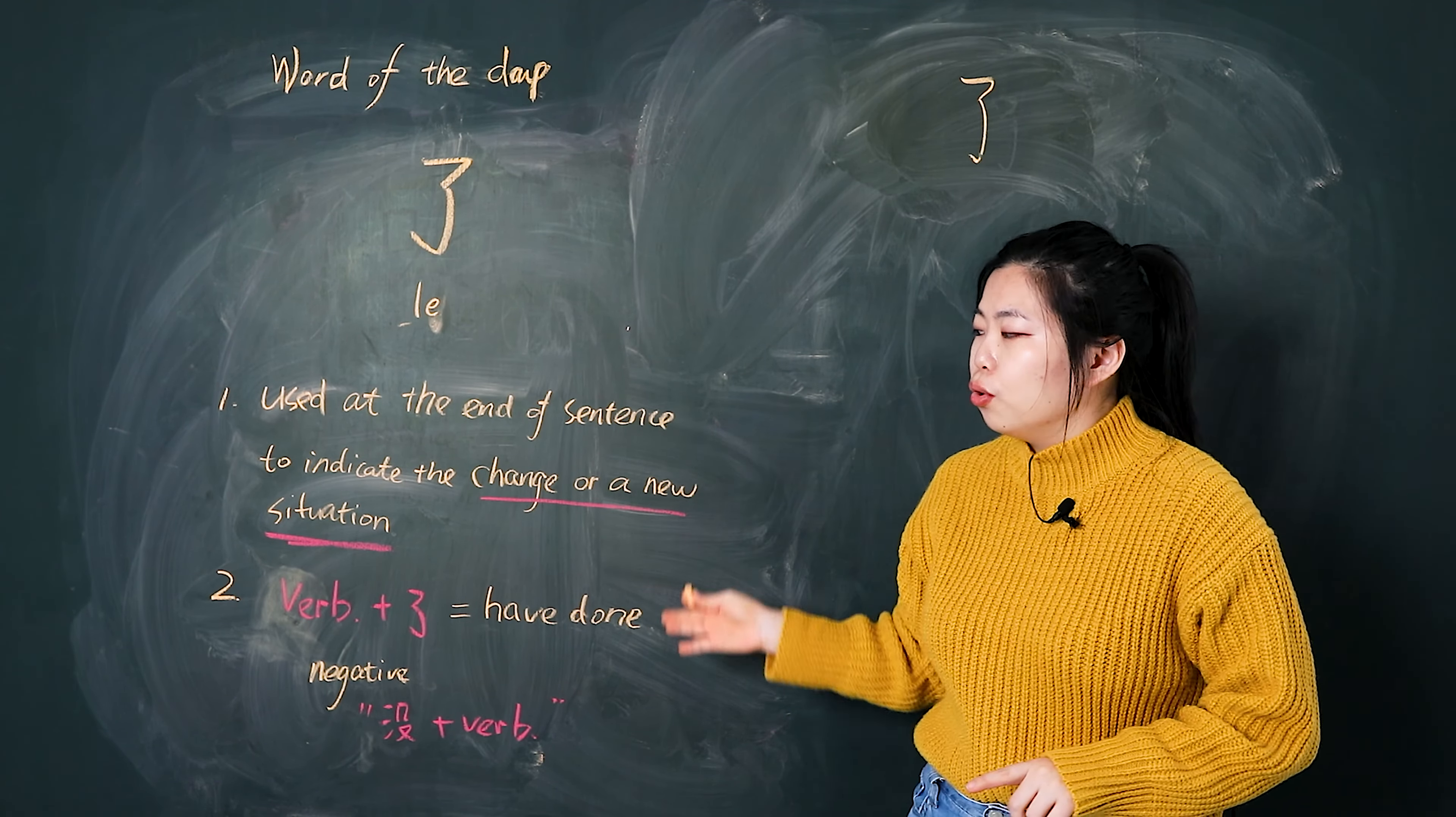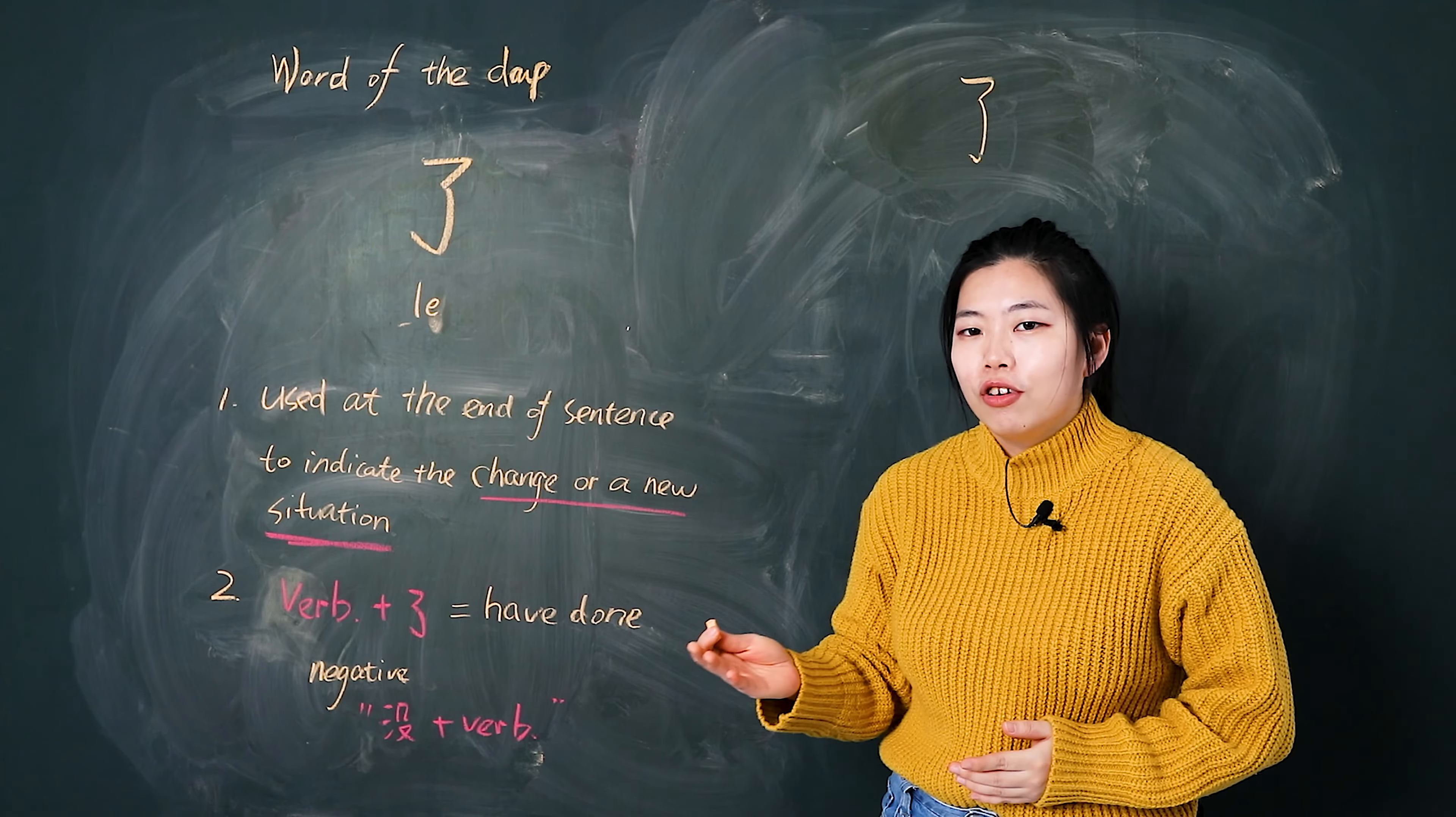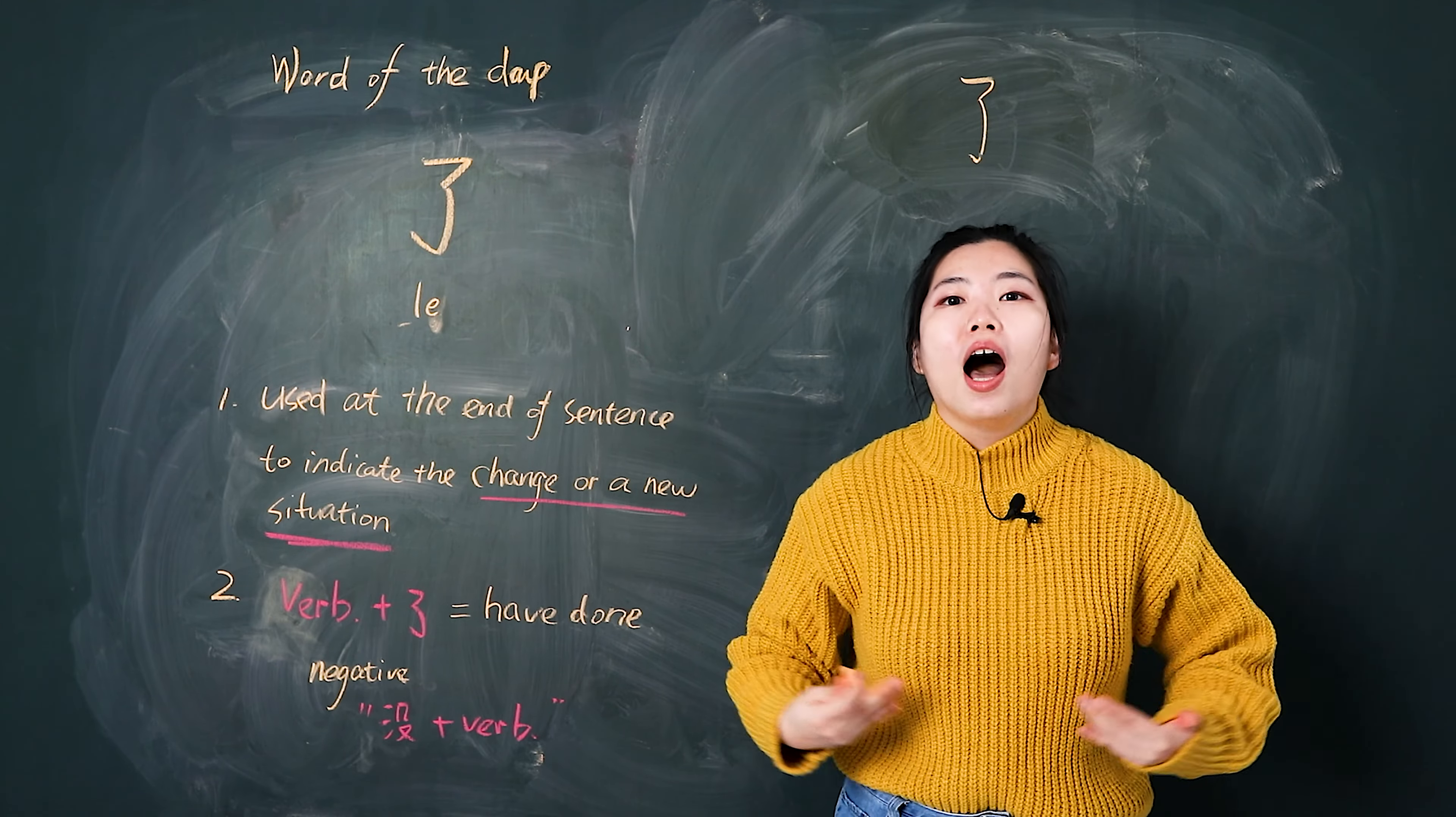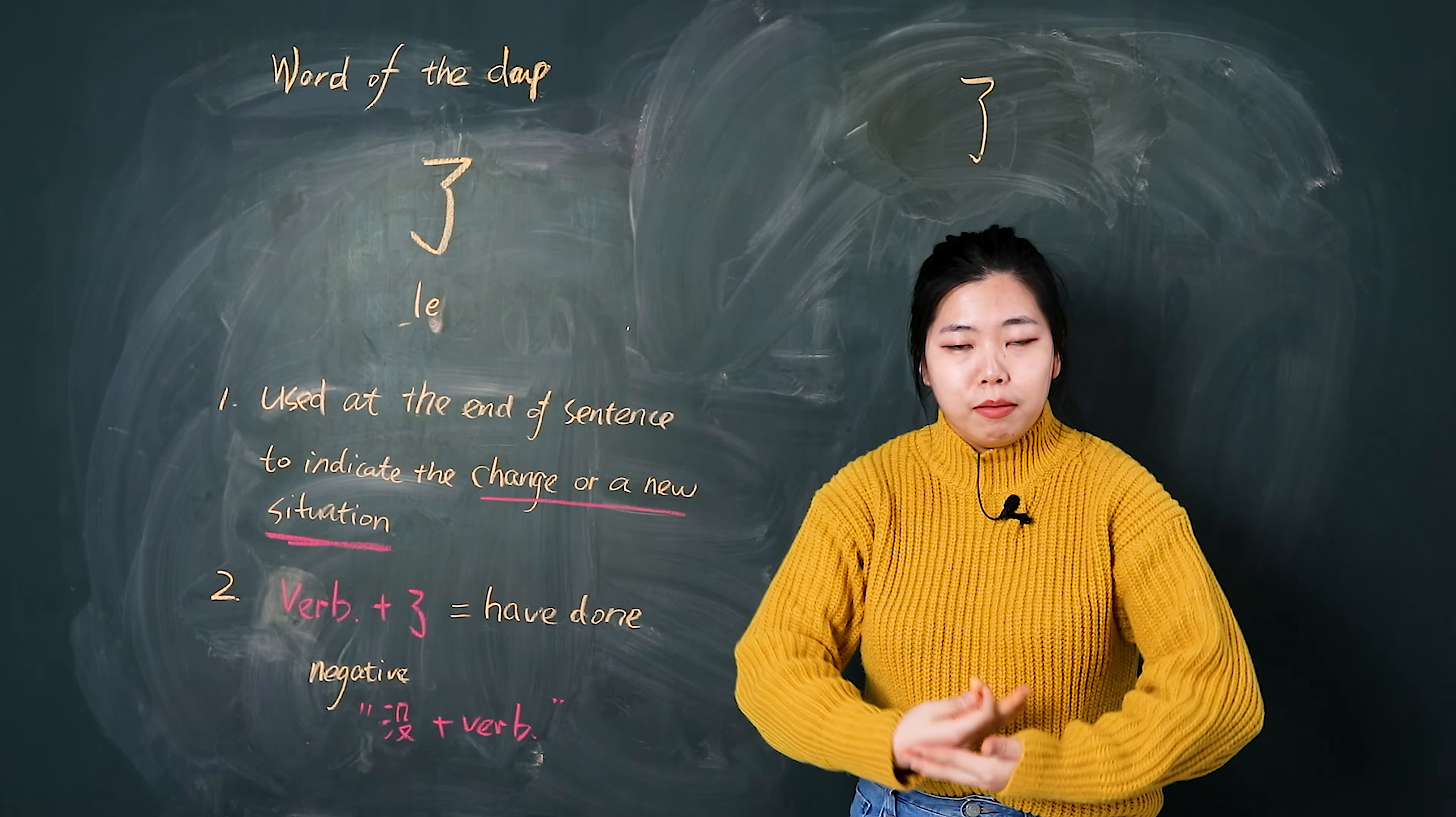So today, we're talking about two meanings of 了. First one: 了 used at the end of the sentence means the situation changed or a new situation is coming. For example, I can say I'm fat, I become fat. 我胖了. 我胖了. It means before I say this sentence, I'm thin. Now I'm fat. Change.